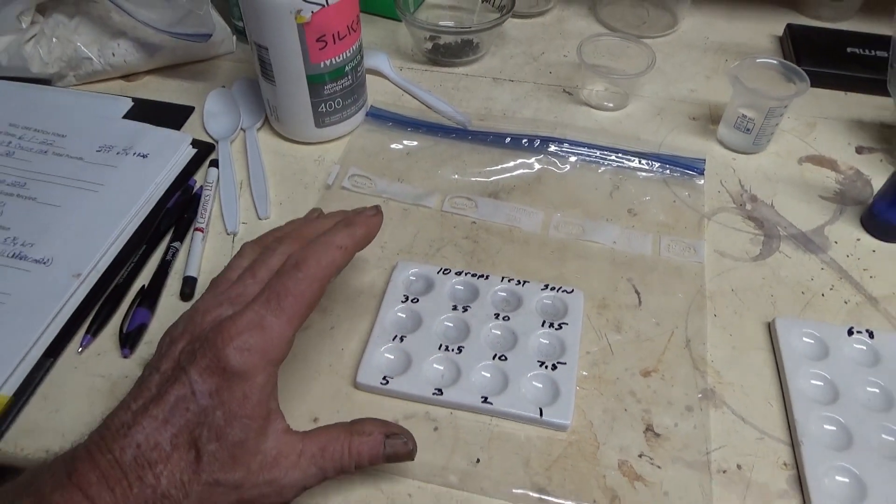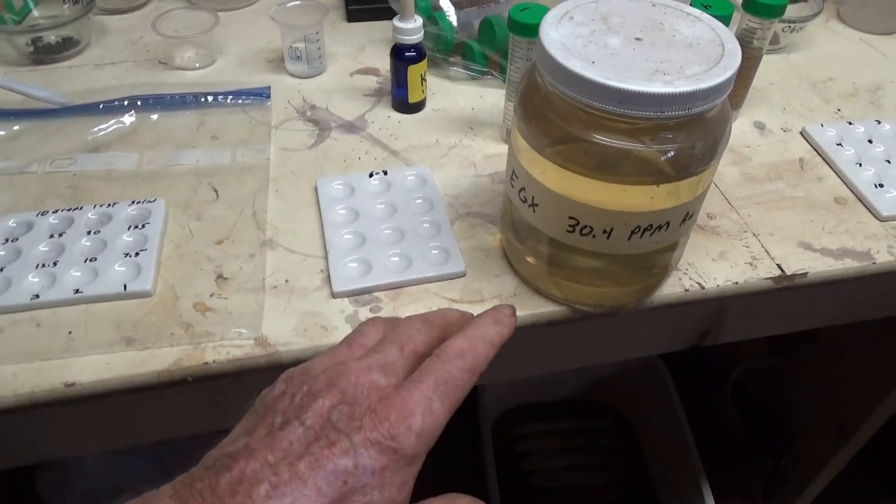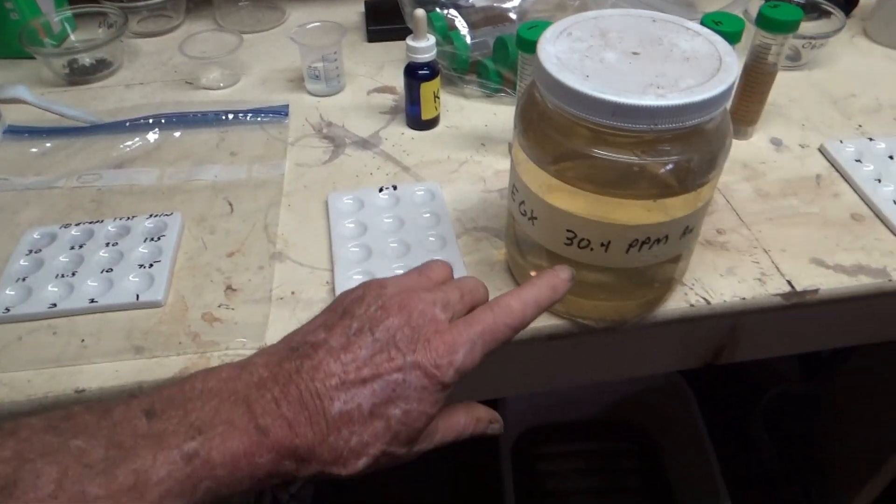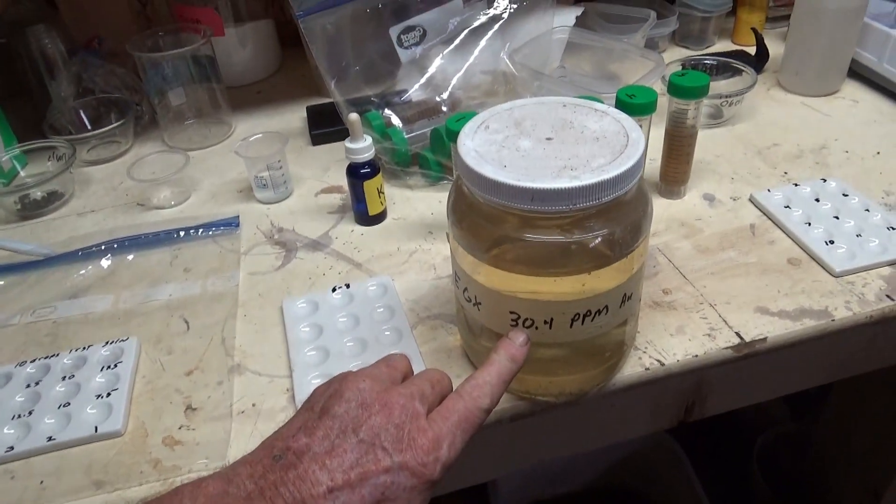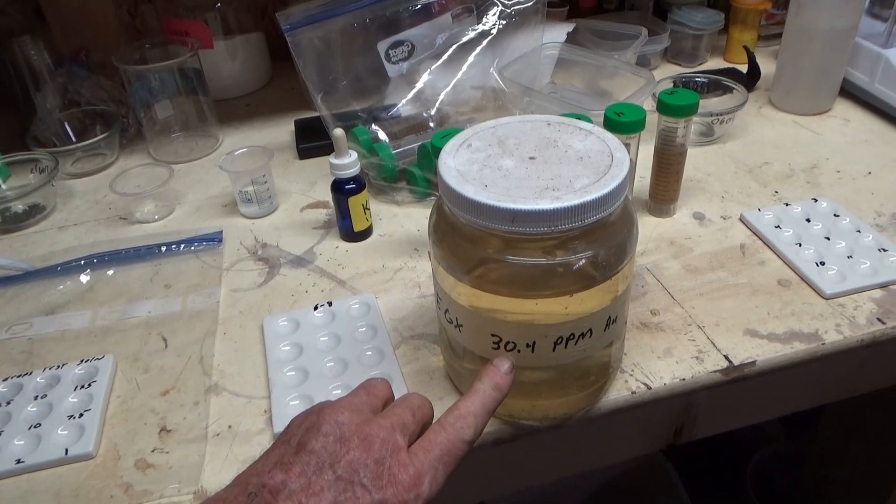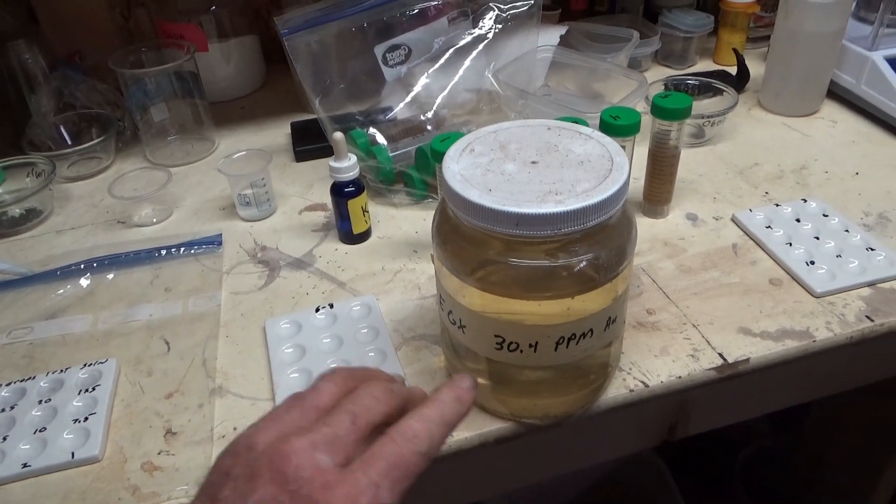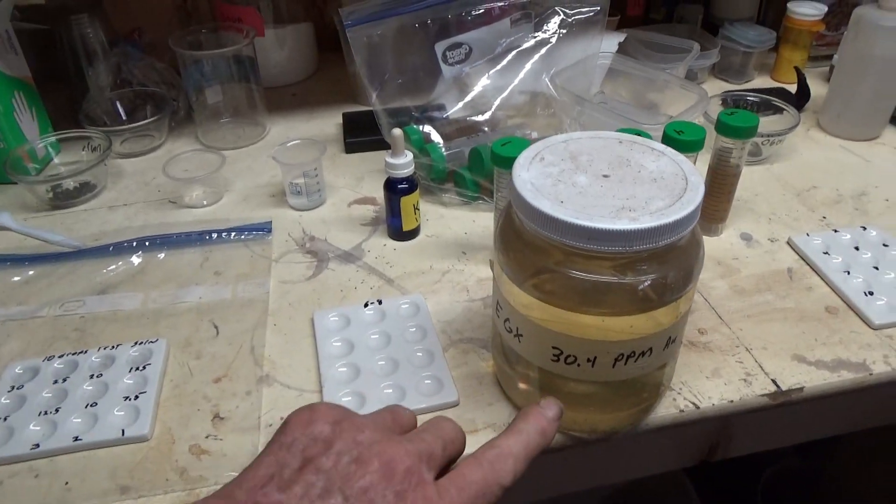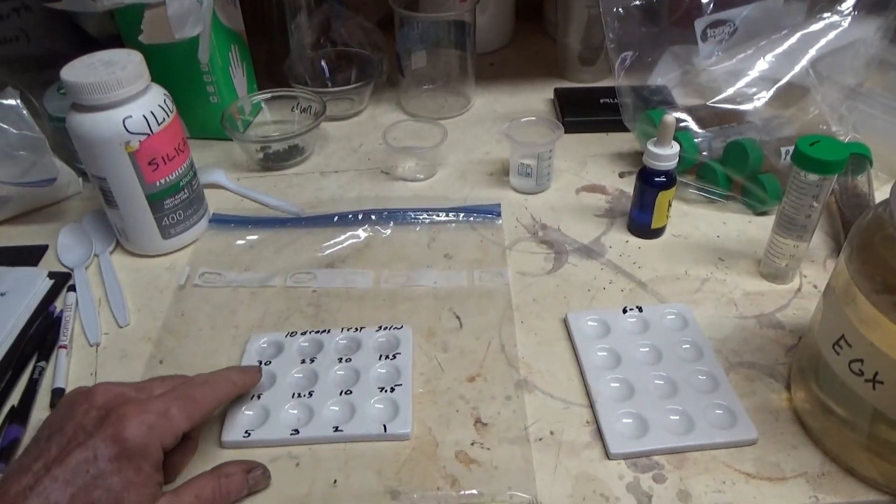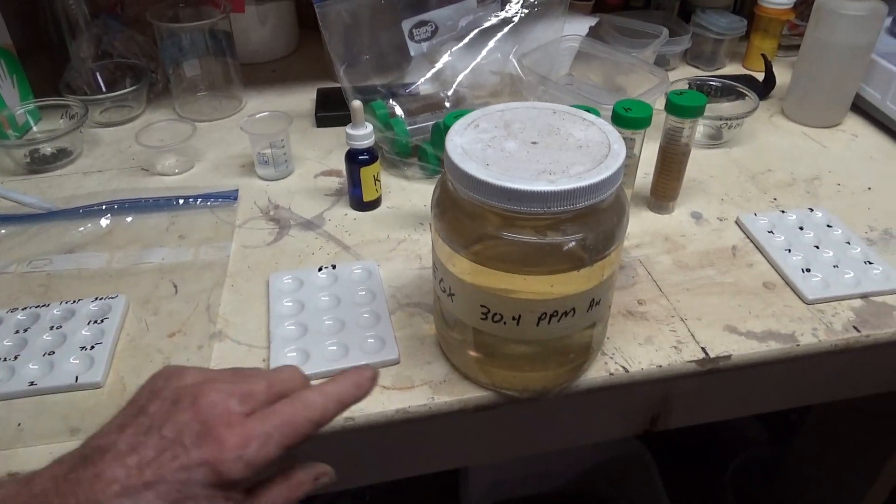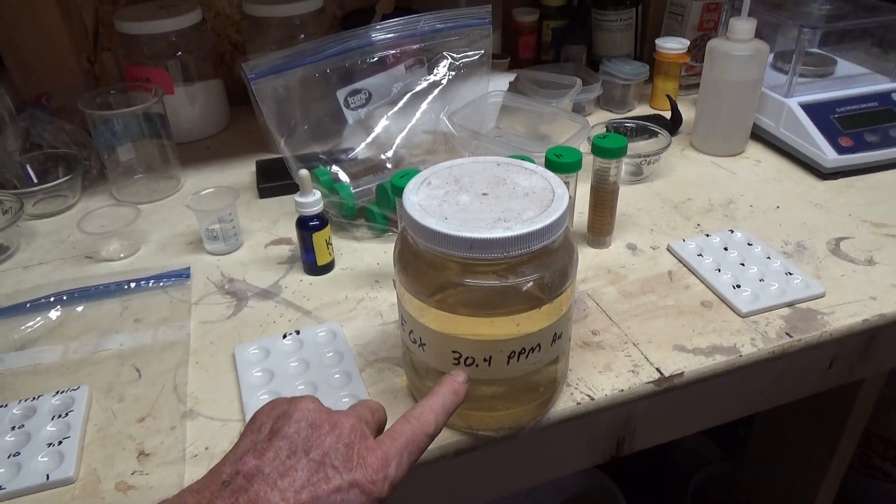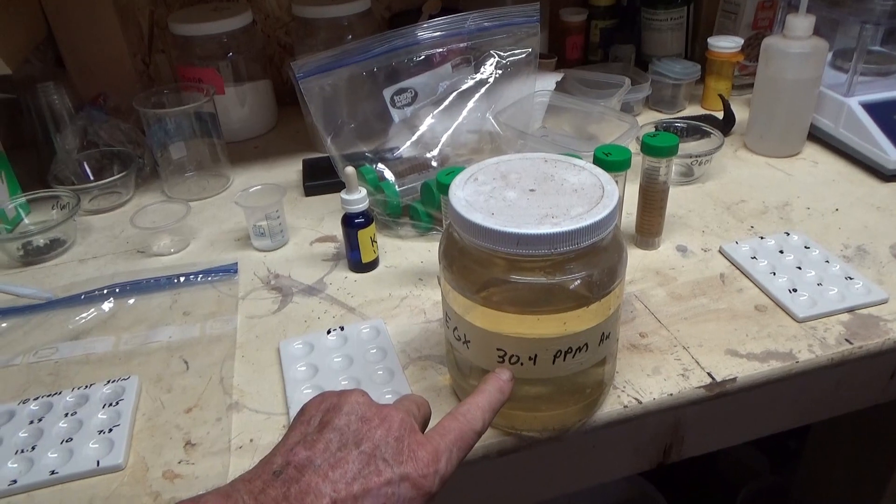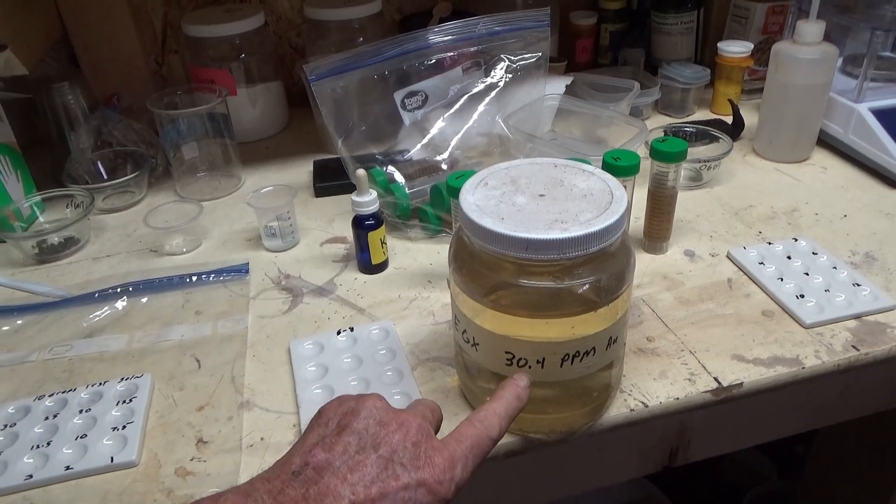The easiest way to do this is quite easy. Since it's 30.4 parts per million, just start with sub-samples of 30 cc's. So you have 30 cc's at 30.4, which is 30 parts per million basically.